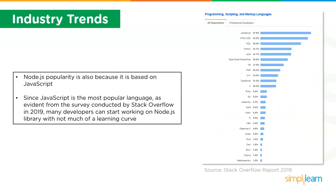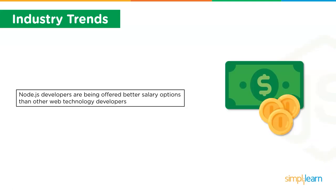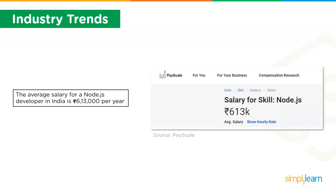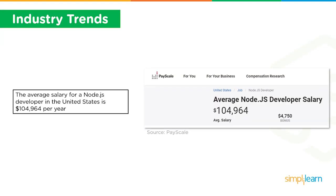The popularity of Node.js is also attributed to JavaScript being the most popular language, as evident from a Stack Overflow survey in 2019, meaning many developers can start working with Node.js with not much of a learning curve. Node.js developers are offered better salary options than other web technology developers. According to PayScale, the average salary of a Node.js developer in India is around 613,000 rupees per year, and in the United States around 105,000 US dollars per year.